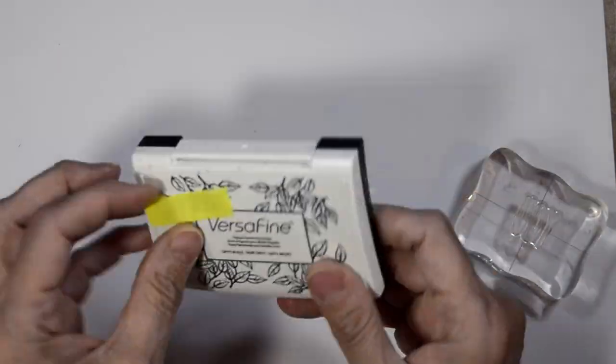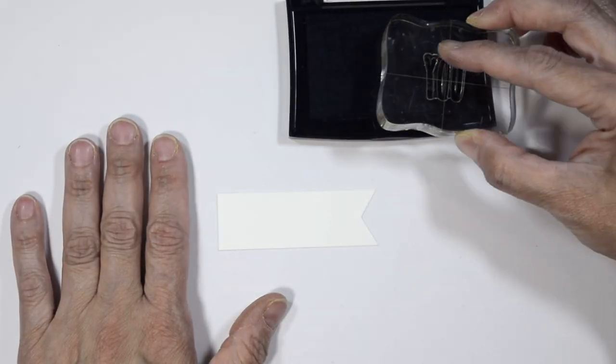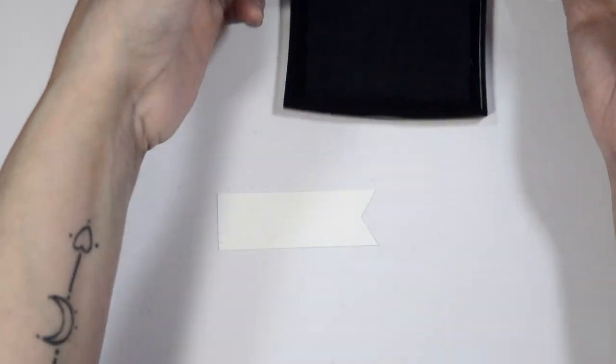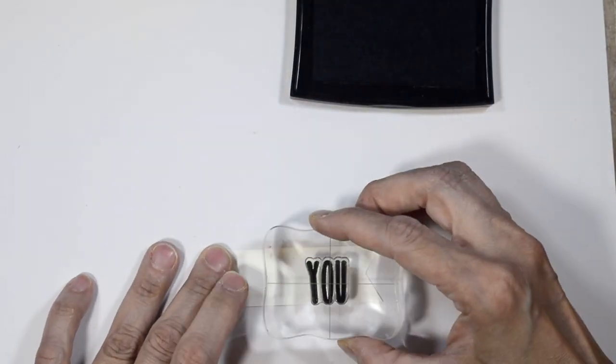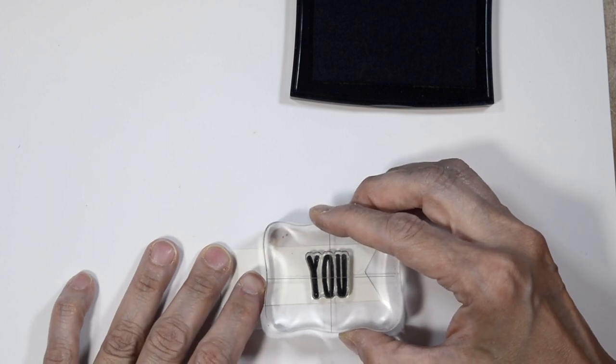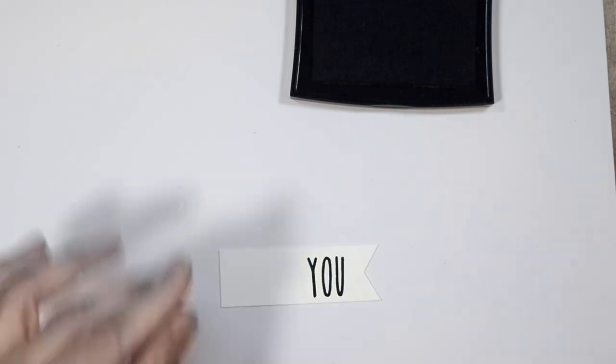I'm going to bring in my VersaFine Onyx Black Ink and I'm going to ink up my stamp that says U. I'm going to stamp that onto our fishtail banner here, closest to the little fishtail area. Stamp that nice on there.